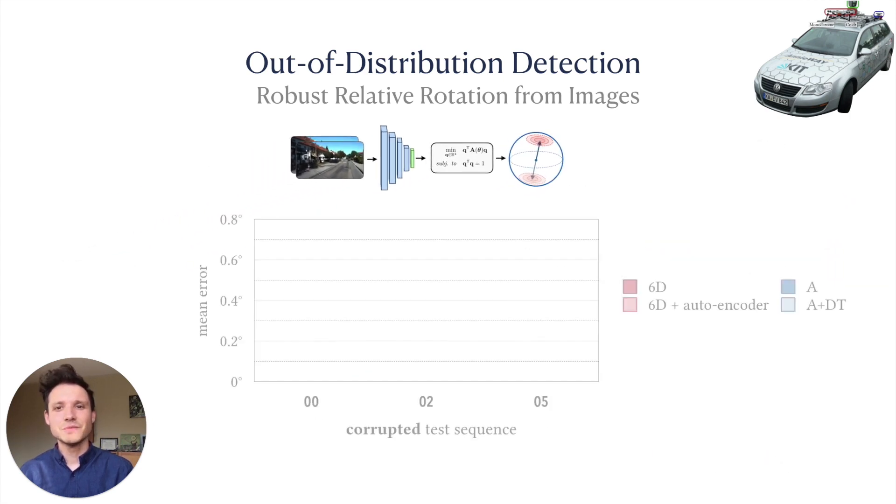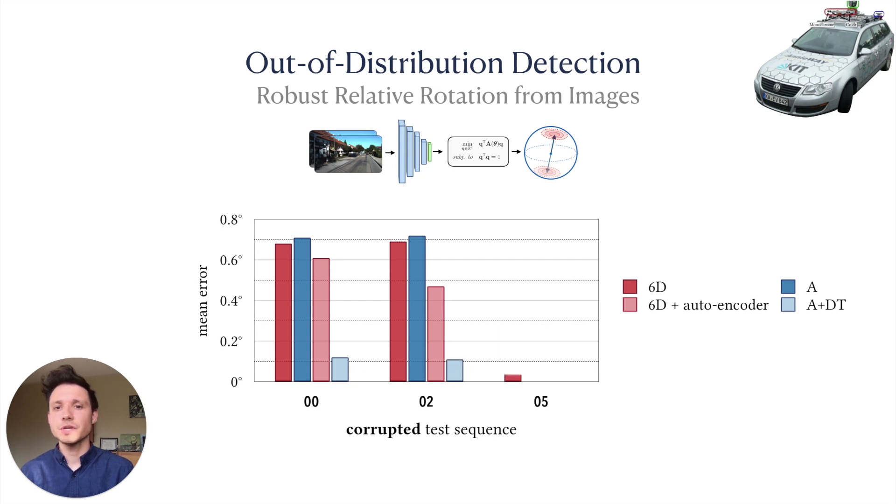This technique, which we called dispersion thresholding, requires no additional training or parameter tuning and outperforms an autoencoder-based novelty detection mechanism while maintaining high precision on all three KITTI test sequences.